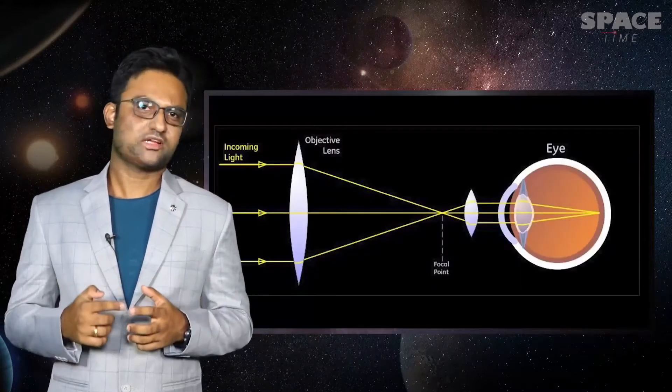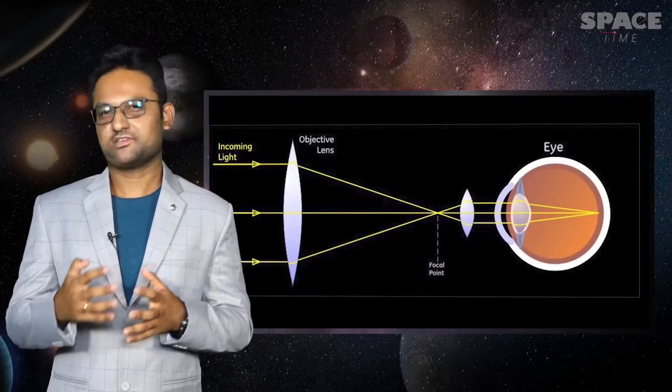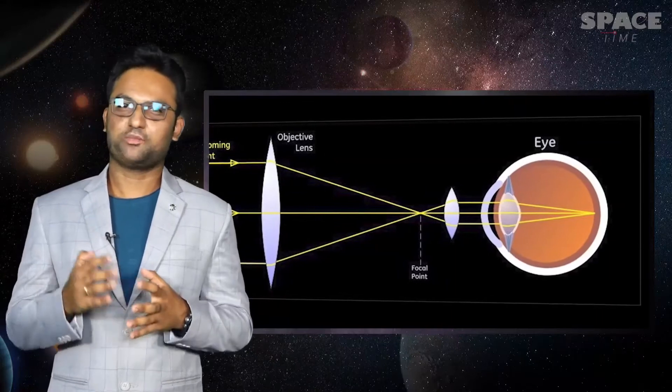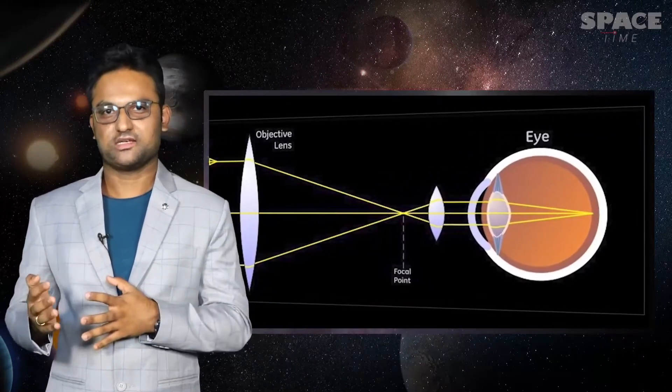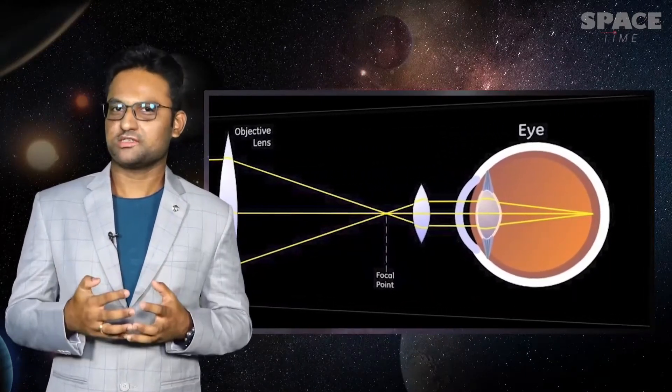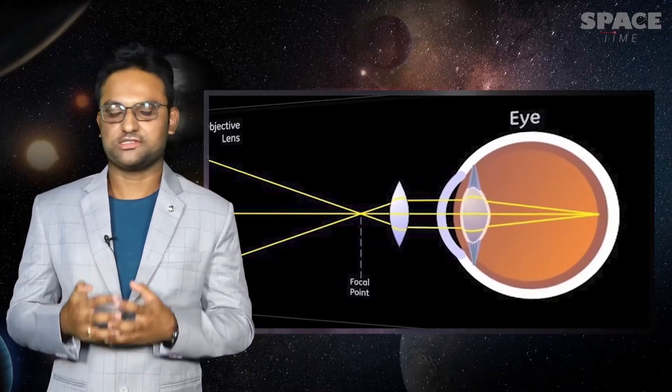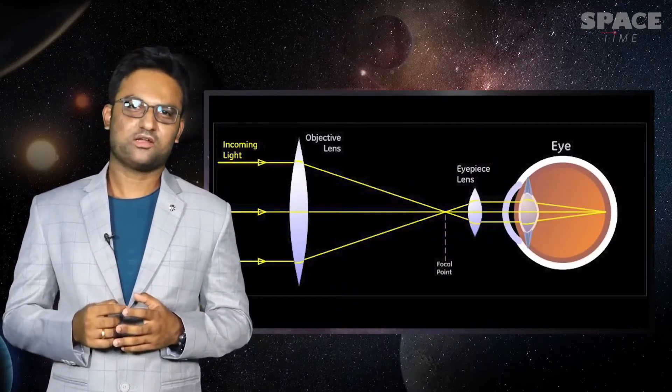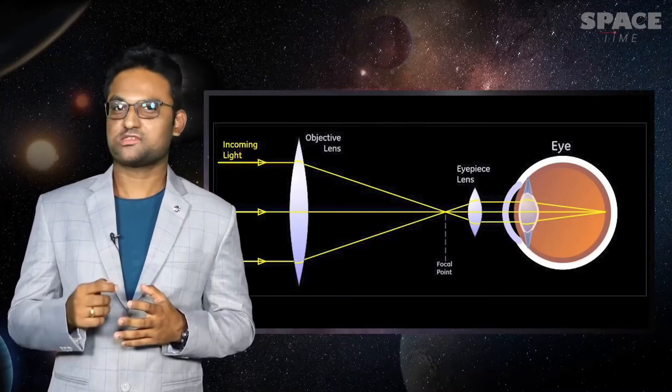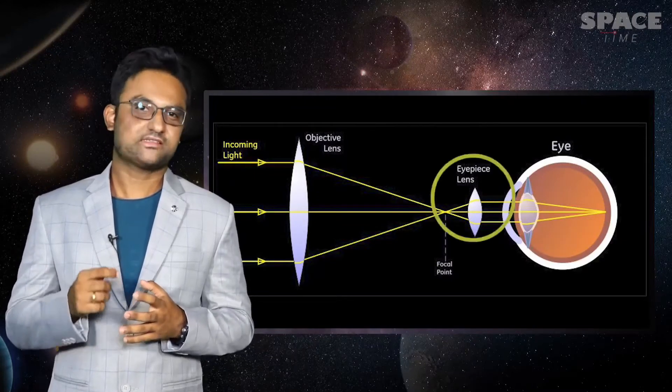So we need one more lens that catches the light as it diverges away from the focal point and bends it back to parallel rays, so that our eyes can refocus it on the retina to form an image we actually see. The small second lens is called an eyepiece lens, as it processes the light so our eye can see.